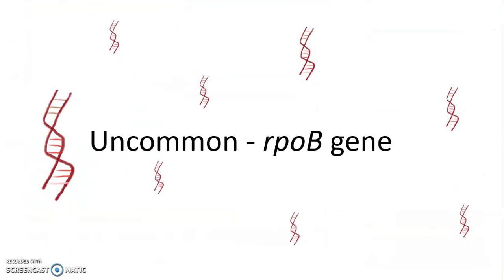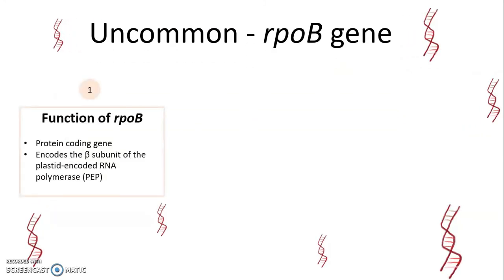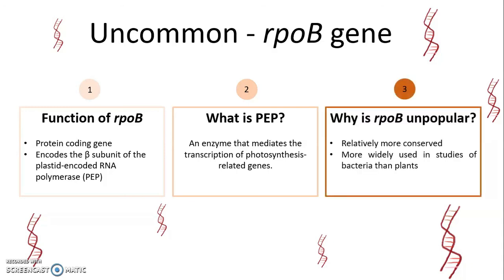Next, we move on to rpoB gene, which is not as commonly used as rbcL and maturase K. The function of rpoB gene is to encode the beta subunit of the plastid-encoded RNA polymerase, also called as PEP. And what is PEP? It is an enzyme that mediates the transcription of photosynthesis-related genes. rpoB gene is not a popular genetic marker because it is relatively more conserved and is not so informative to distinguish among family and species. However, it is more widely used in studies of bacteria than plants.